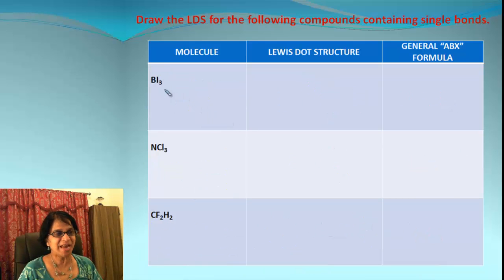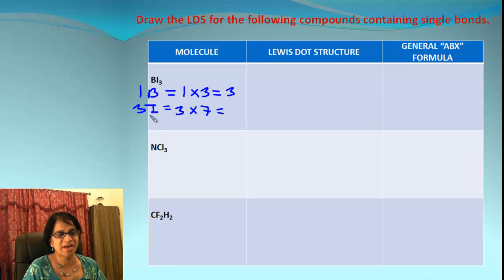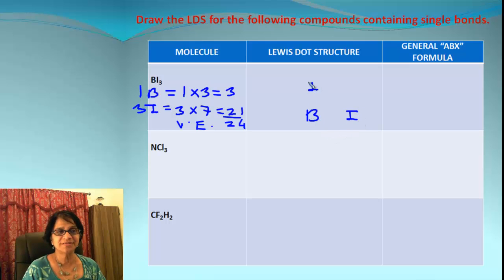Here is another example: BI₃, which has 1 boron and 3 iodines. Let's do the count. Boron is in group 13, so it brings 3 electrons. Each iodine brings 7 electrons, and we have 3 iodines — that's 21. The total count is 24 valence electrons. Out of boron and iodine, the central atom is obviously boron, and we are going to put the three iodines around it.